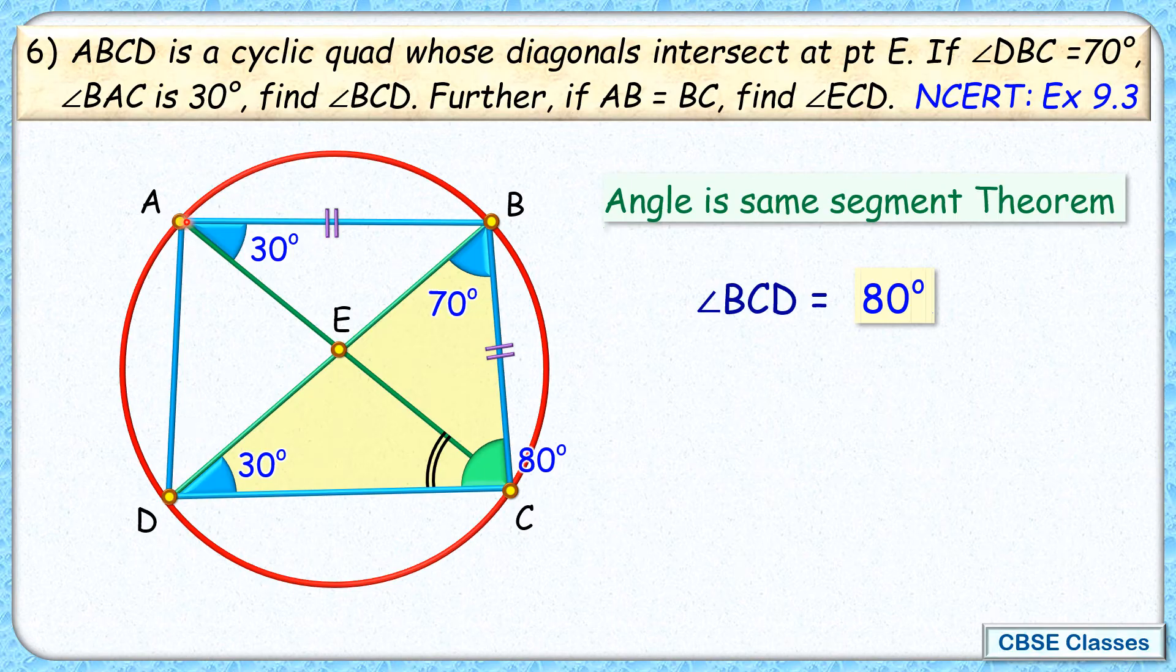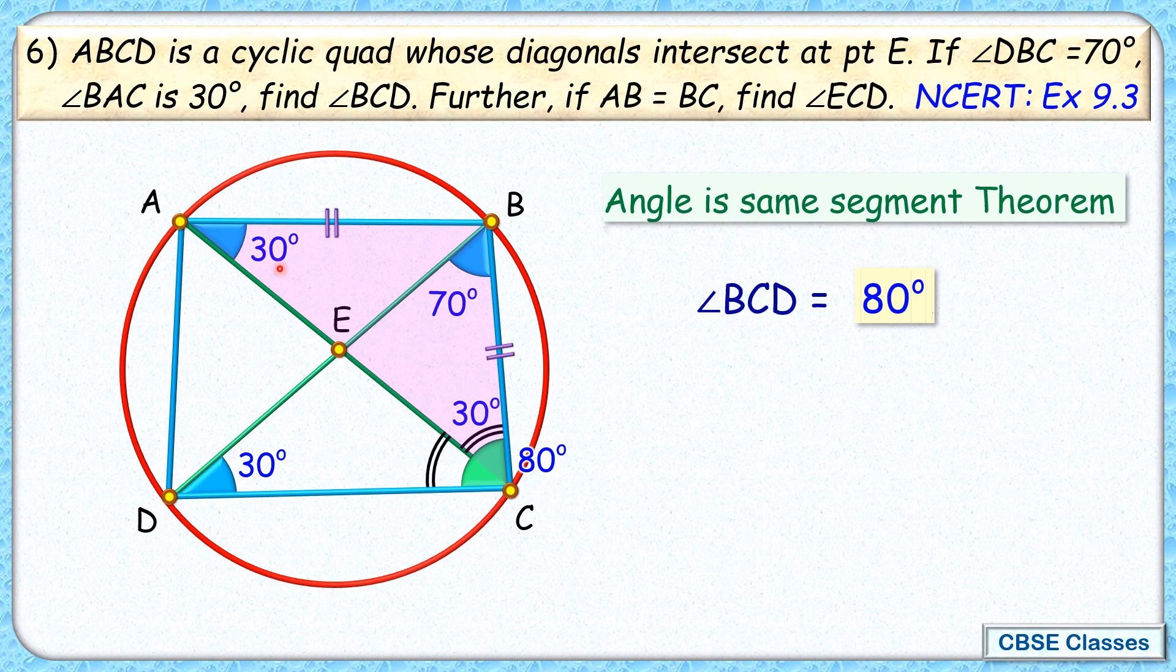Now here, if you look at triangle ABC, in this triangle ABC, AB and BC are equal, so it is an isosceles triangle. In an isosceles triangle, the opposite angles will also be equal, so this angle here will be the same as 30 degrees.